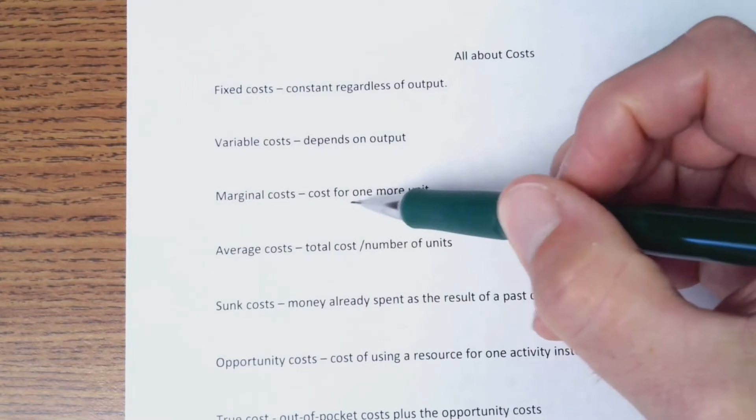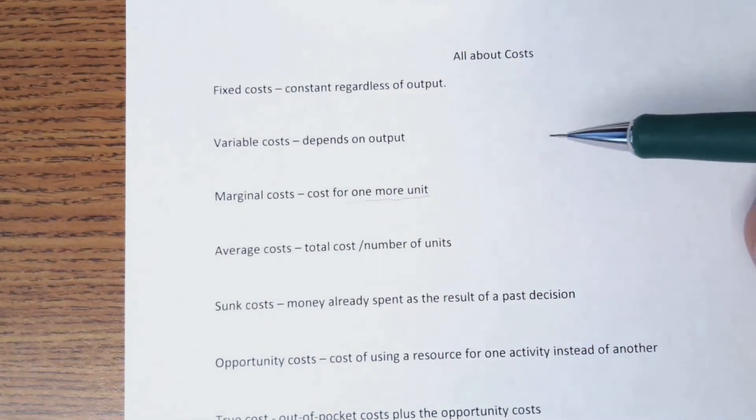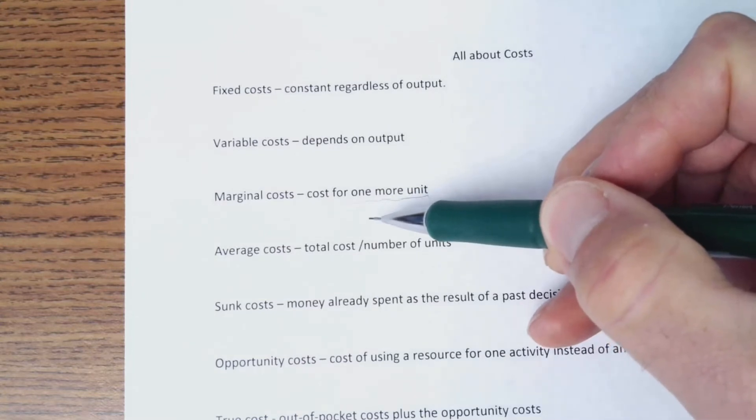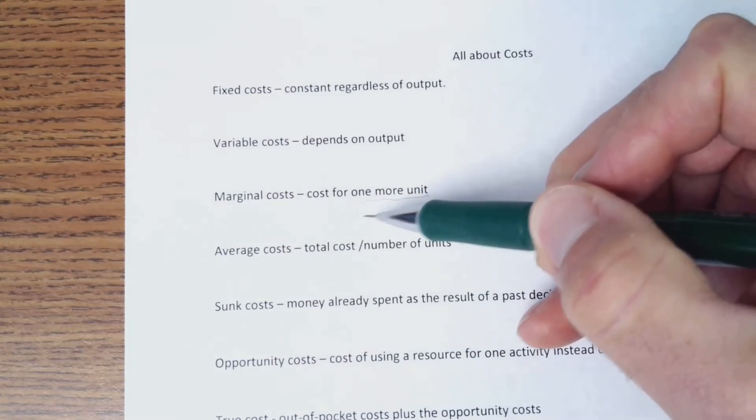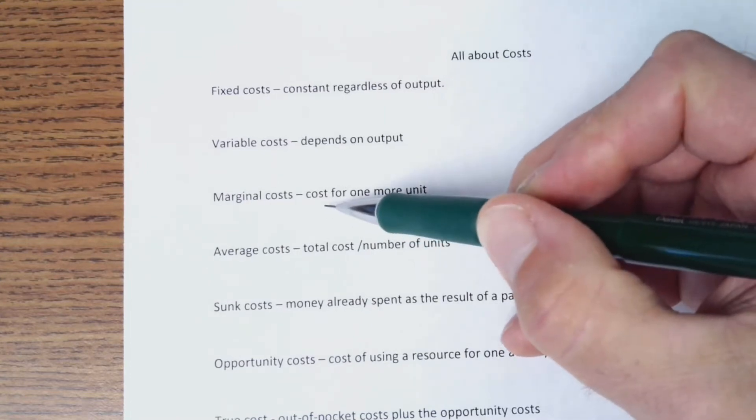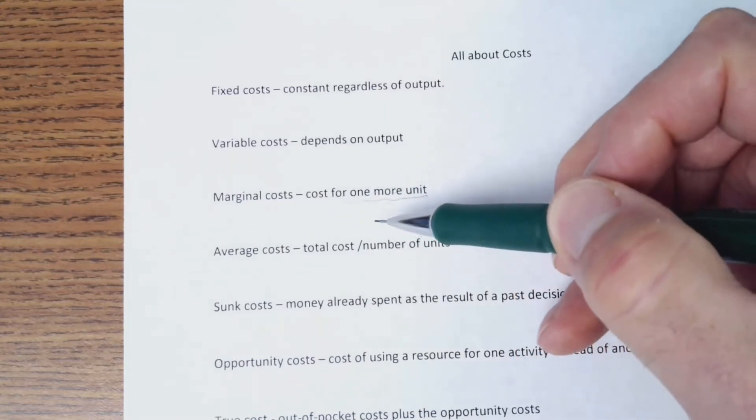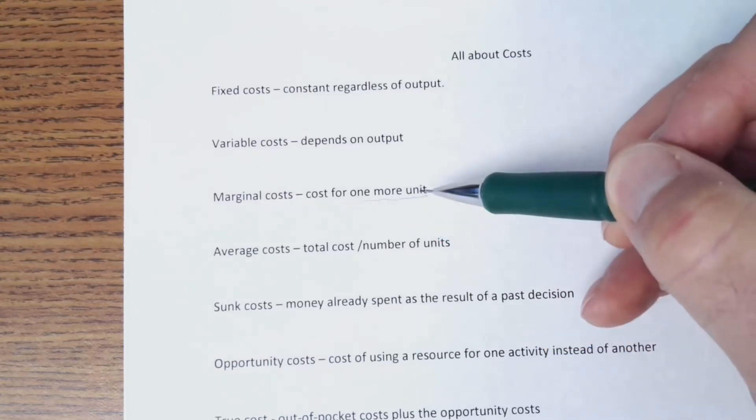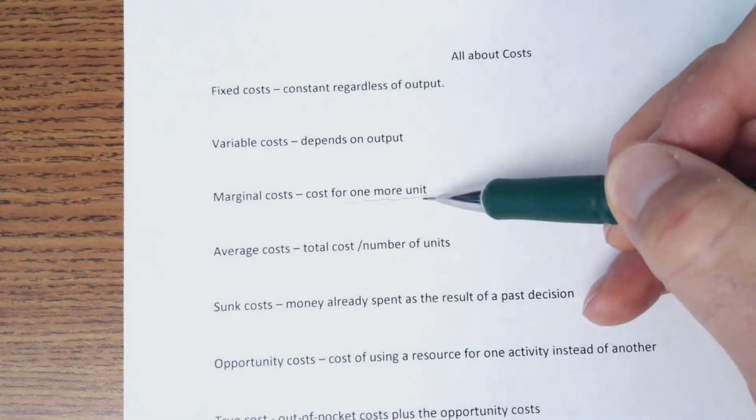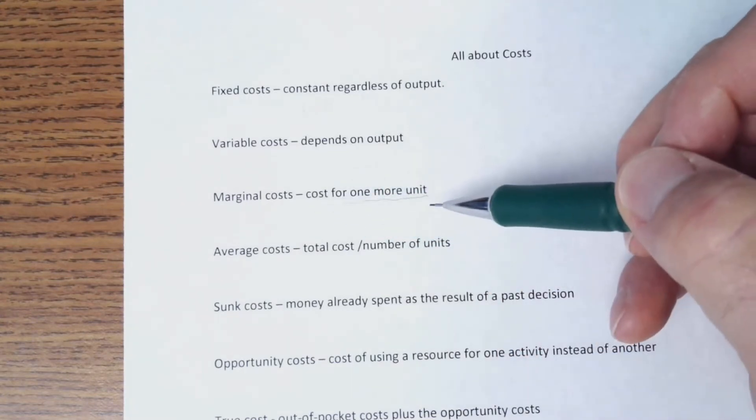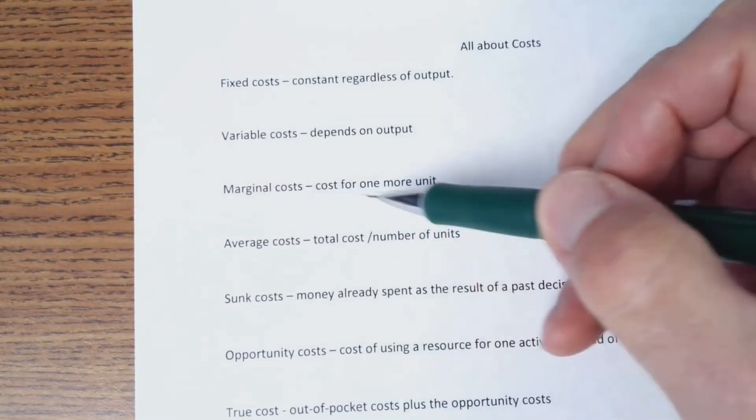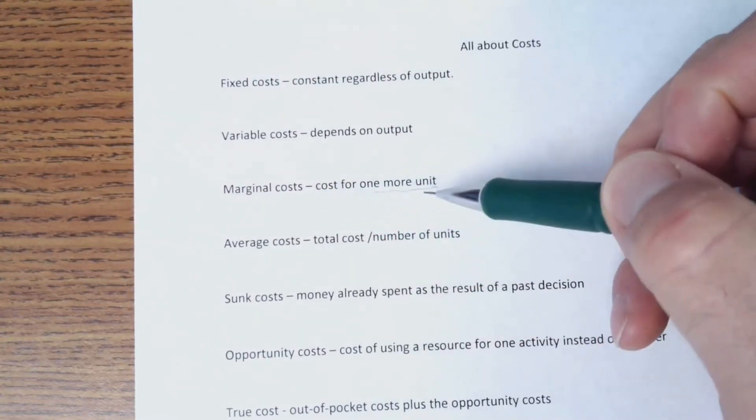Marginal cost is cost for one more unit. So the very lowest marginal cost would be materials, like the electricity or whatever goes into making that product. Now, if you've maxed out your production, and then to make one more, you have to pay overtime or you have to buy more machinery or something like that, then the marginal cost can go quite high.